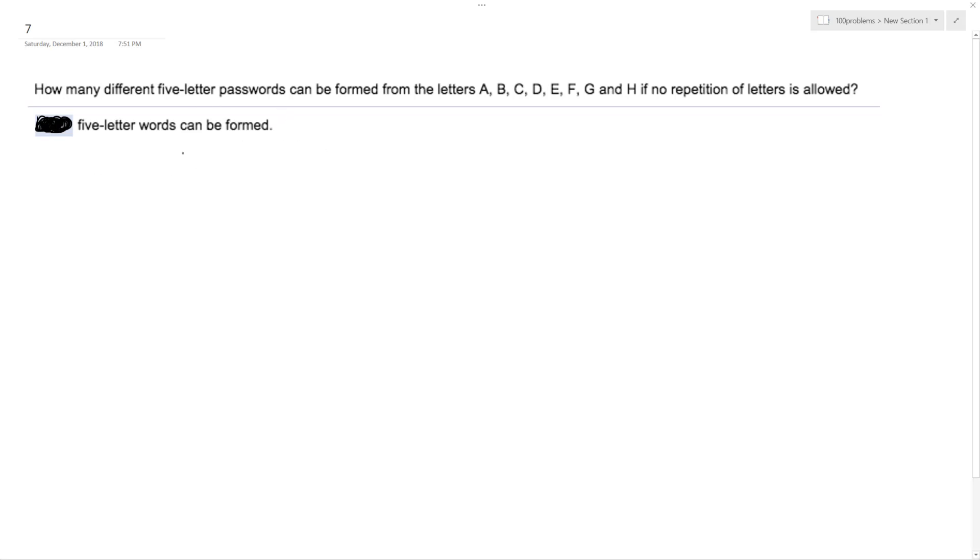So these are permutations, so this is going to be P of quantity - there's one, two, three, four, five, six, seven, eight letters total, so eight, and then five, choosing five.